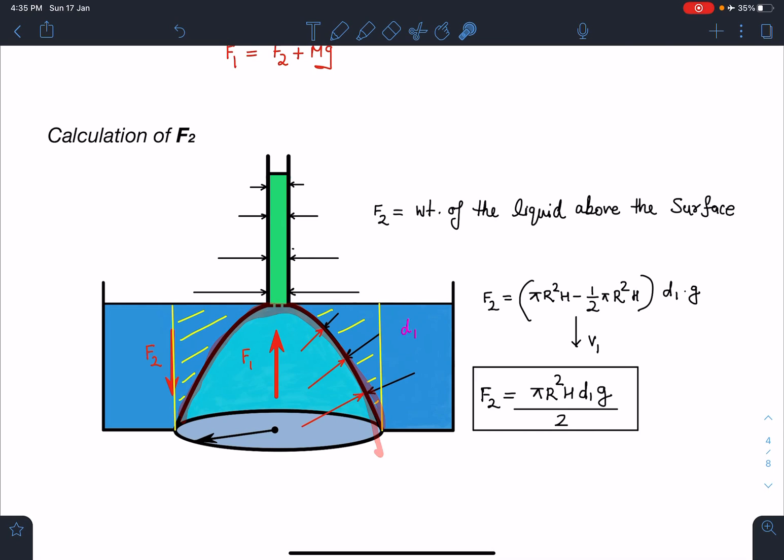However, here the calculations are very simple as long as you know the formulas and the logic. F2 is going to be pi R squared H, volume of bigger cylinder here, minus volume of this paraboloid. So you will get the volume of this remaining part here. Its weight is going to be the value of F2. I am going to get F2 as pi R squared H minus half pi R squared H times d1 into g, where d1 is the density of this liquid. Here this density is 2d0 and this density is d0.